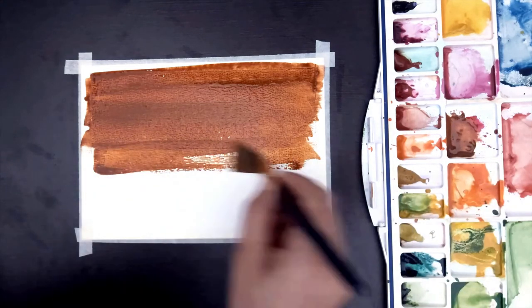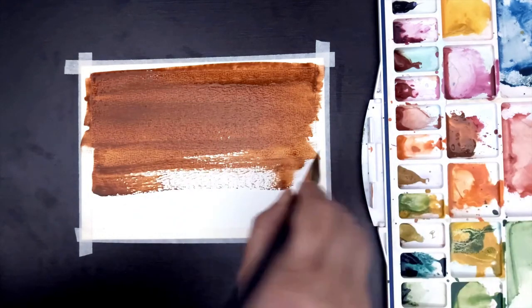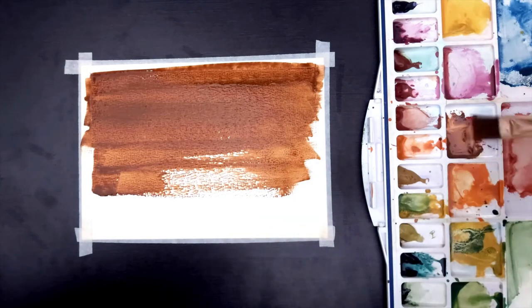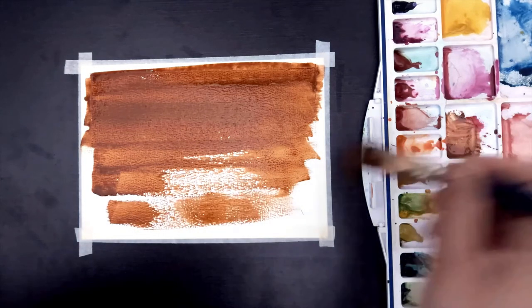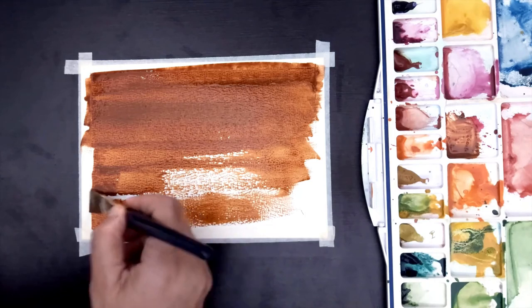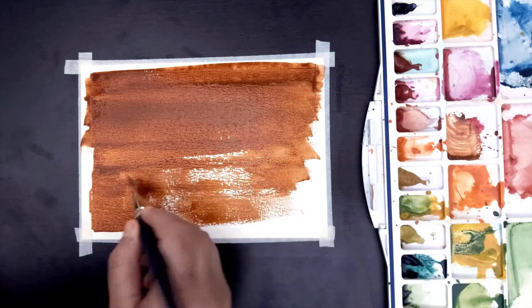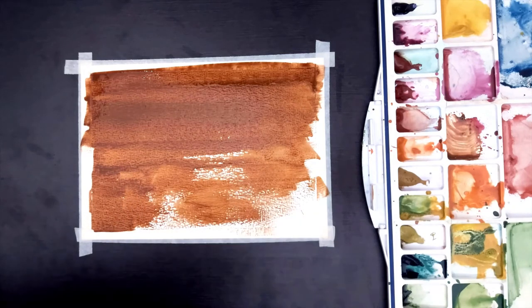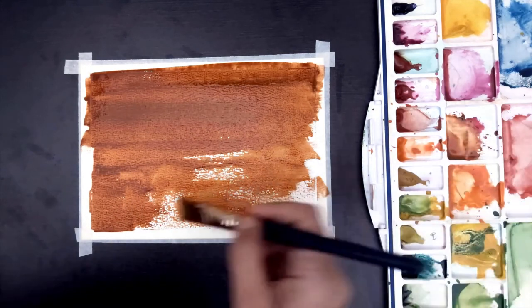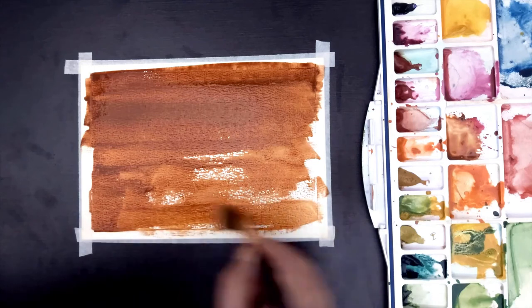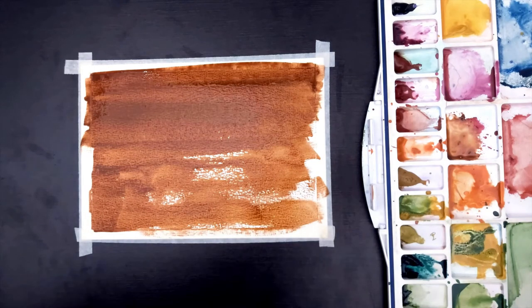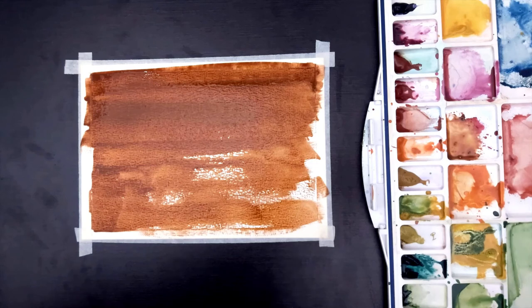While giving the texture from the bubble sheet, just take care of one thing. I will use a little thick color on the paper because if the water content is more on the paper, the texture will not come as we are expecting. So take the color but not too much of water, it should be a little thick. Maybe it's not that flowing on the paper, but the texture whatever will come from this thick paint will be really nice.